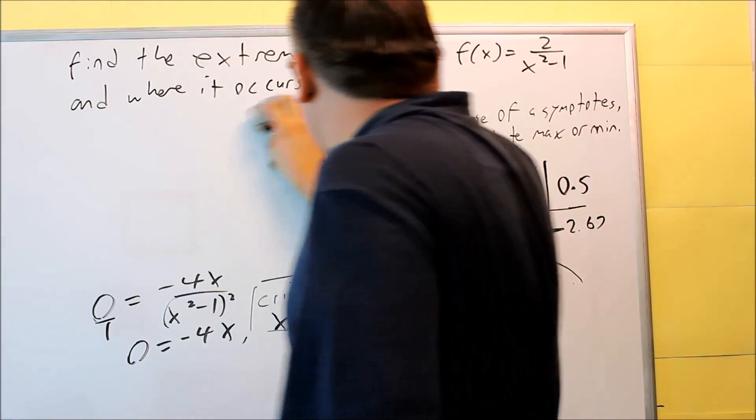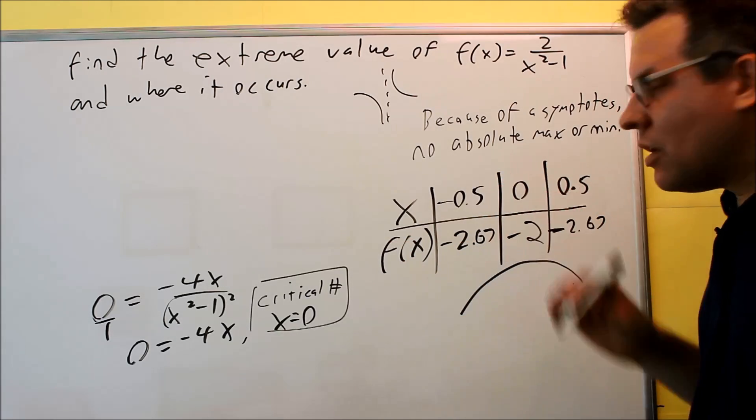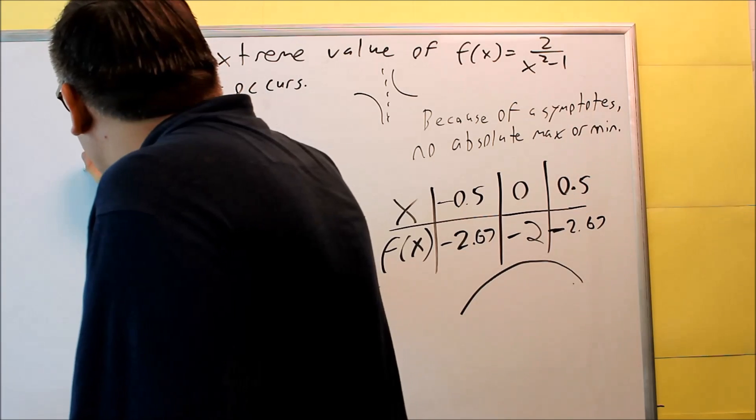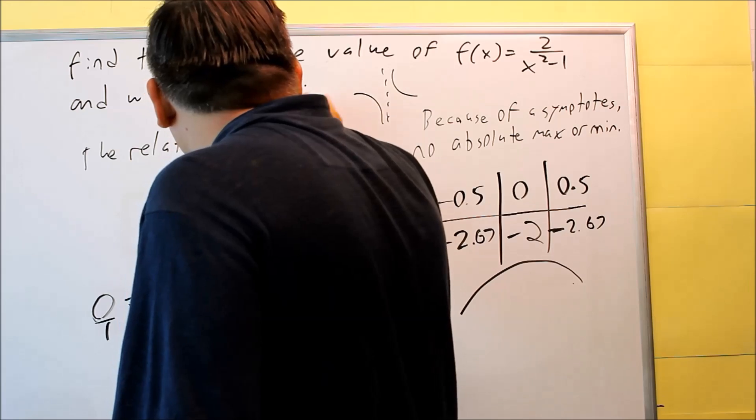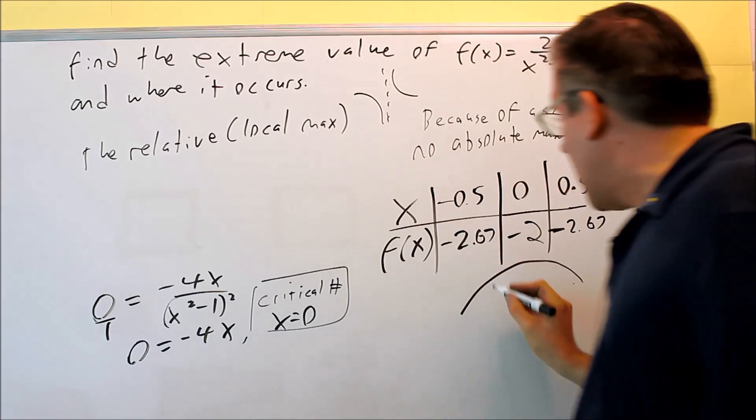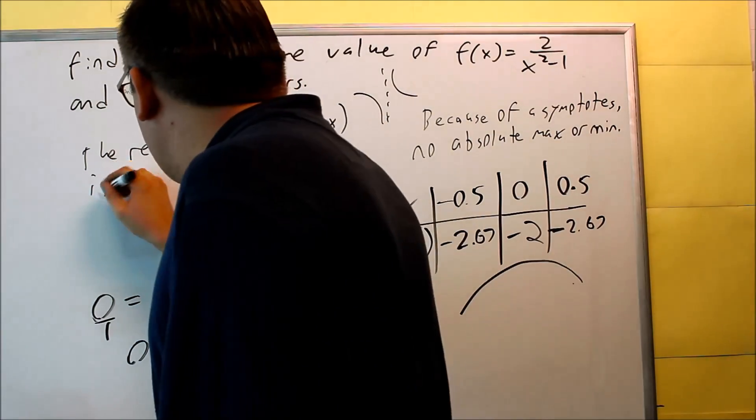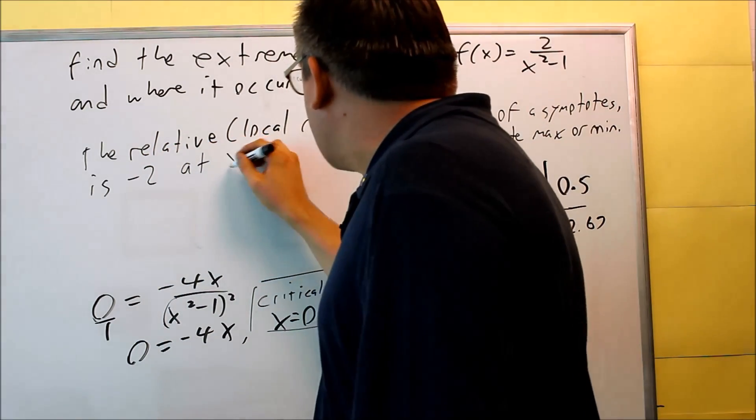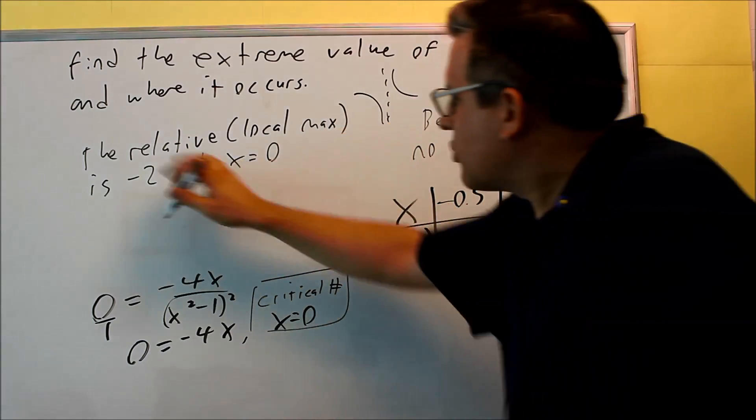Now these kind of problems that you'll be doing online, you're going to have a multiple choice option on it. So there will probably be one of these that will be chosen for you there. You can just choose that one. But basically you would say the relative or local, you'll say local, on this one it's a max, it's a local max because we know it's going up and going down. Local max is, and you'll say the y value, negative 2, and that's going to occur at x is equal to 0. So this would be your answer.